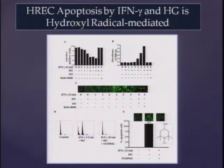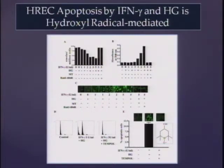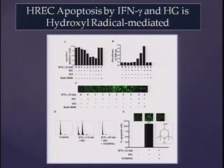He then looked at the mechanism of apoptosis. Using Tempol, a reactive oxygen species quencher, you can inhibit interferon gamma-induced apoptosis. This was done because 3-hydroxykynurenine, one of the kynurenine pathway products, binds to metal ions and generates reactive oxygen species — specifically hydroxyl radicals — which can kill cells. This appears to be the mechanism by which interferon gamma kills retinal endothelial cells.